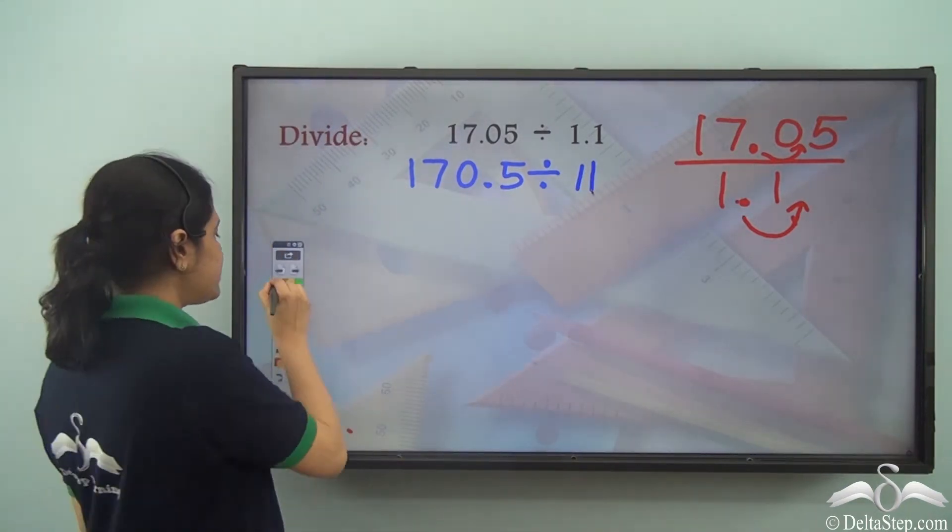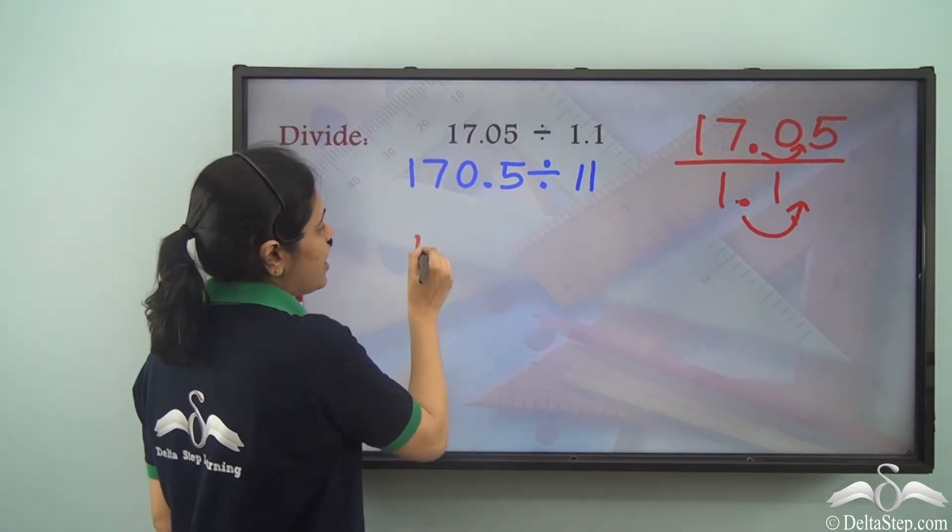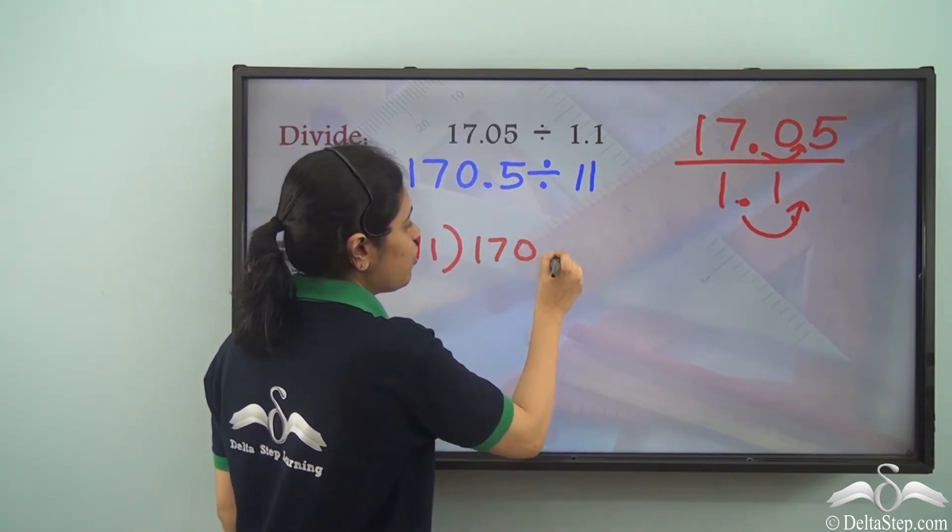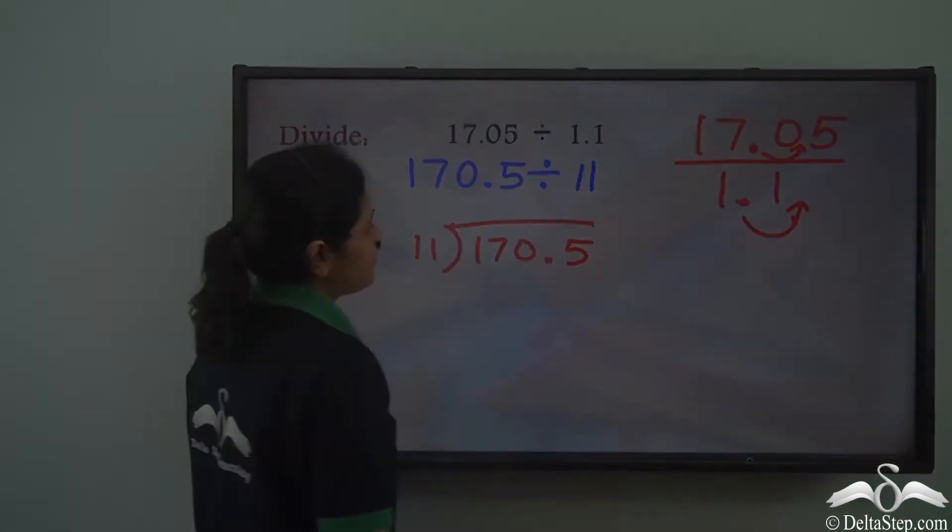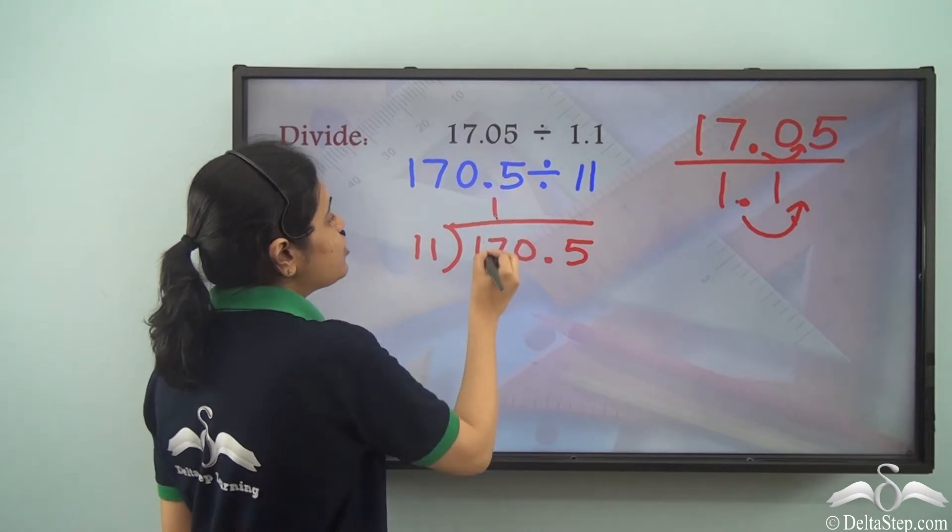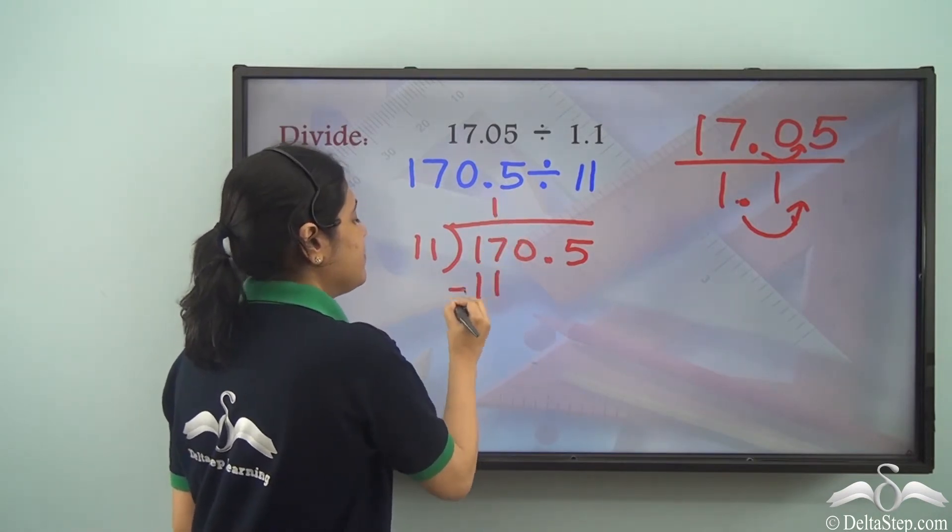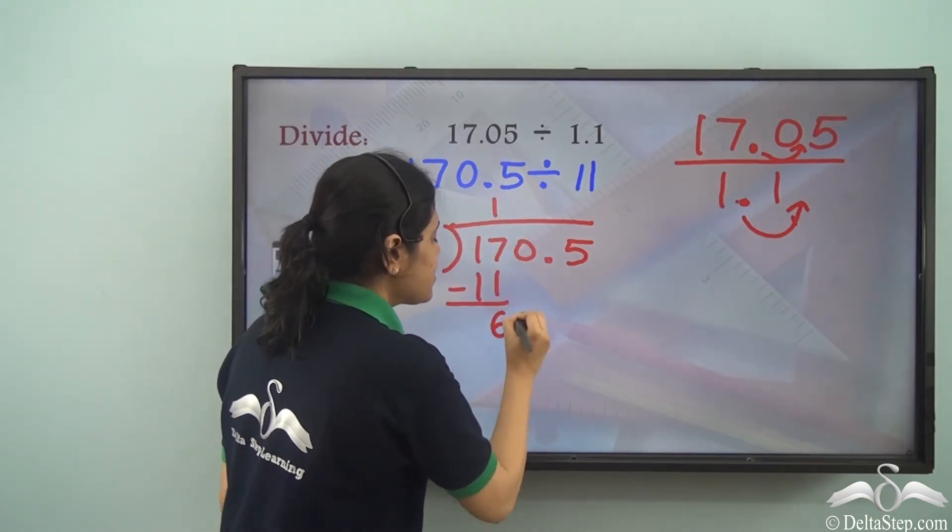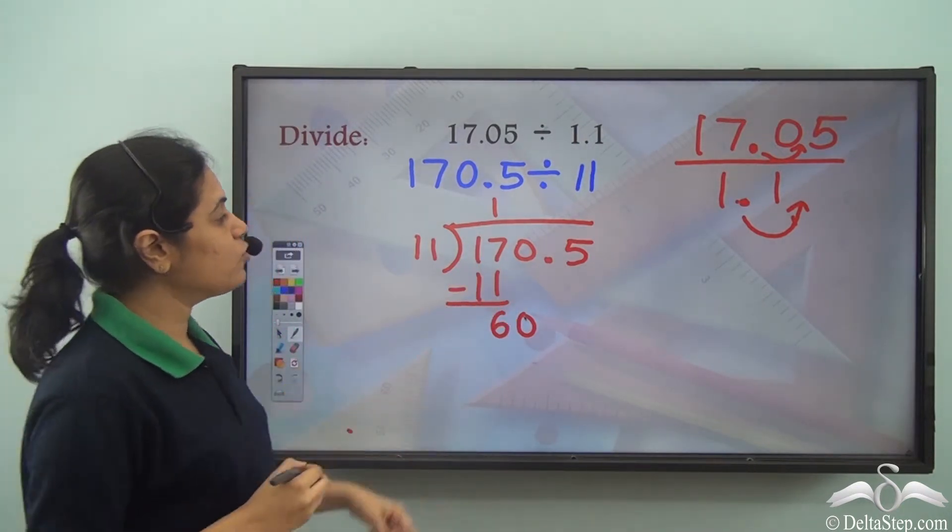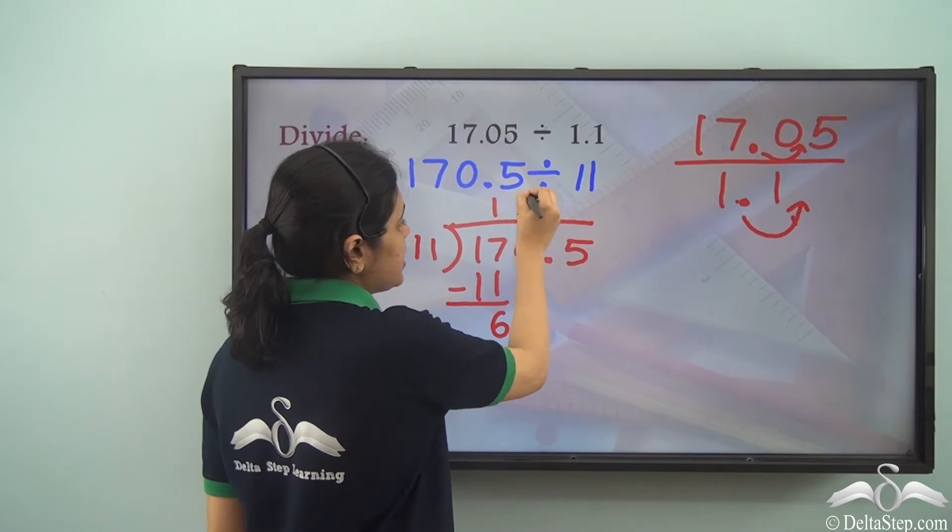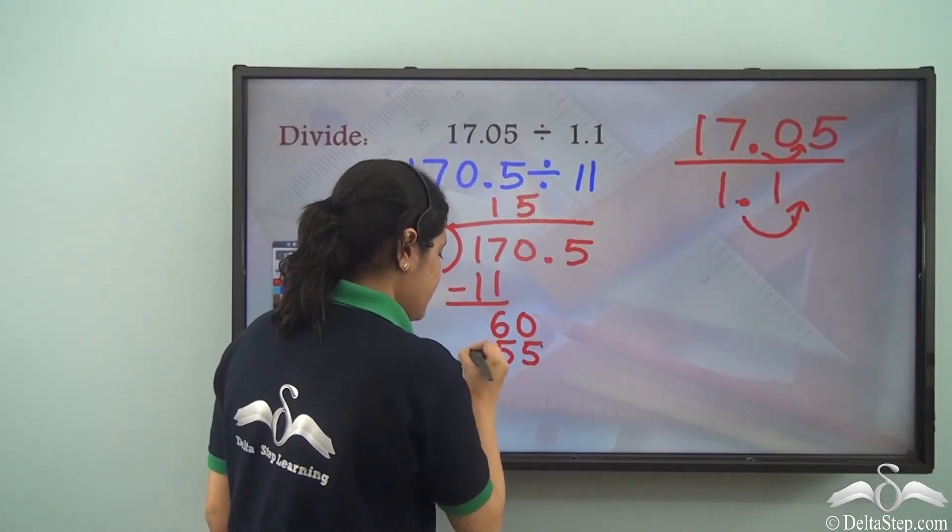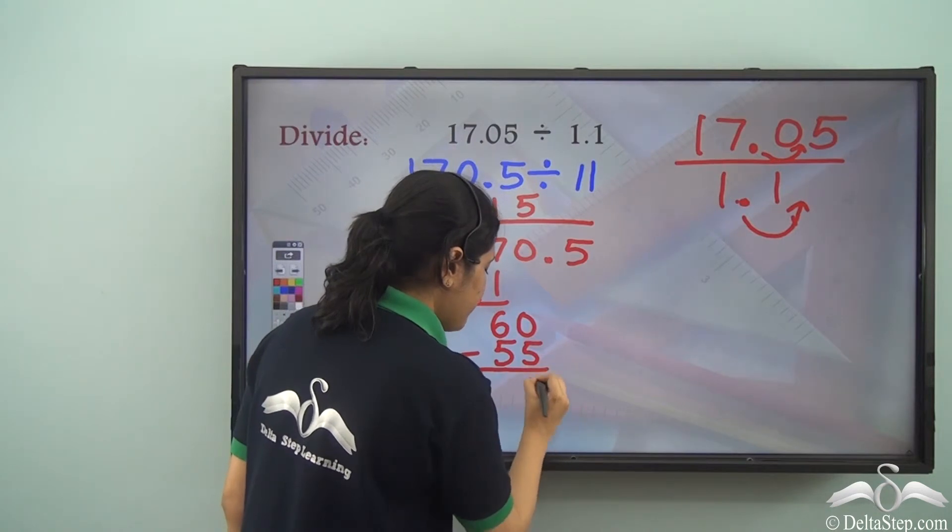So now let us divide this. So I have 11 and here I have 170.5. So first I take 17. Now 11 into 1 is 11. So I have 6. And I bring down this 0. 11 goes 5 times into 60. 5 into 11 is 55. So I subtract to get a 5 here.